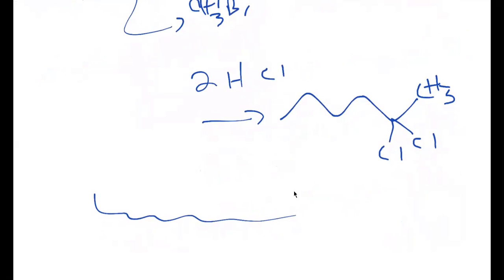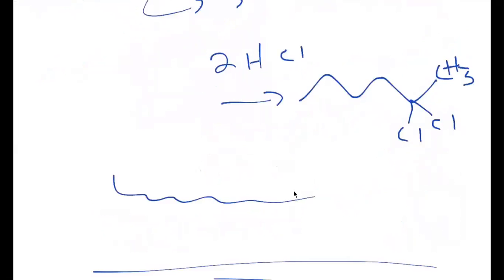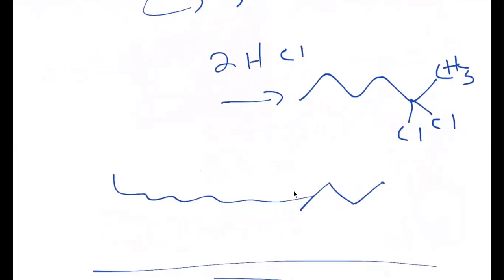And then with the two HCl, this is the product. It's still going to follow Markovnikov's rules. So when I add one, it's going to give me this, and then when I add the second one, the chlorine is still going to add to the more substituted carbon.